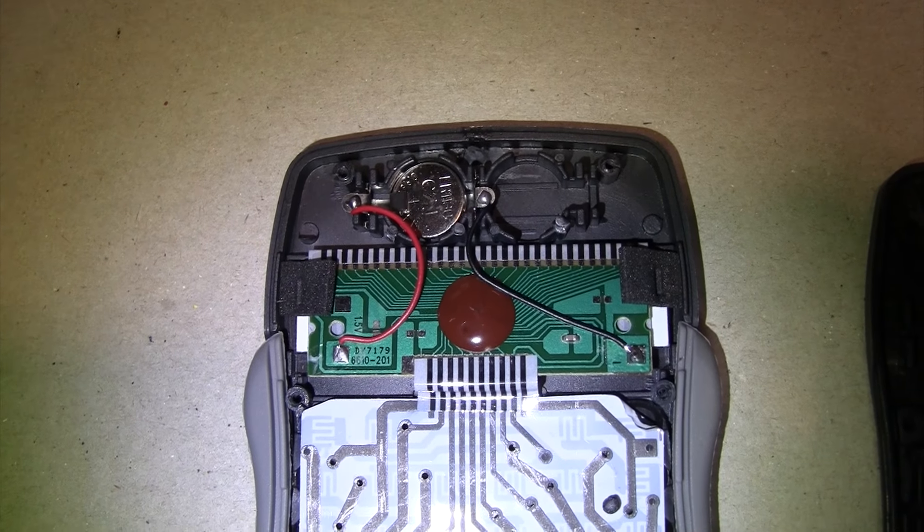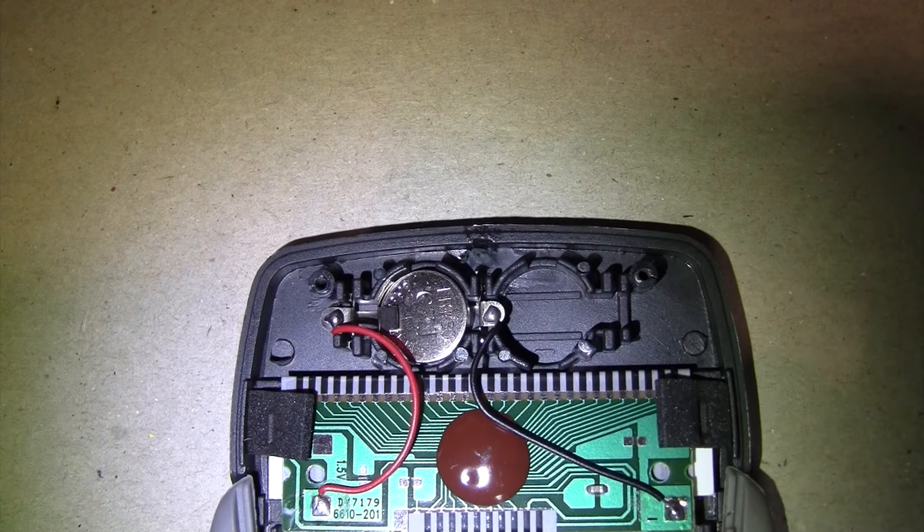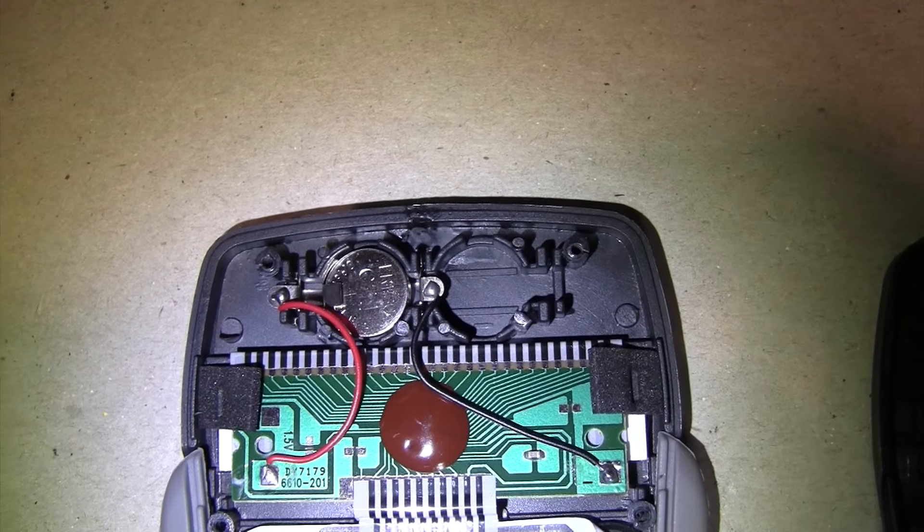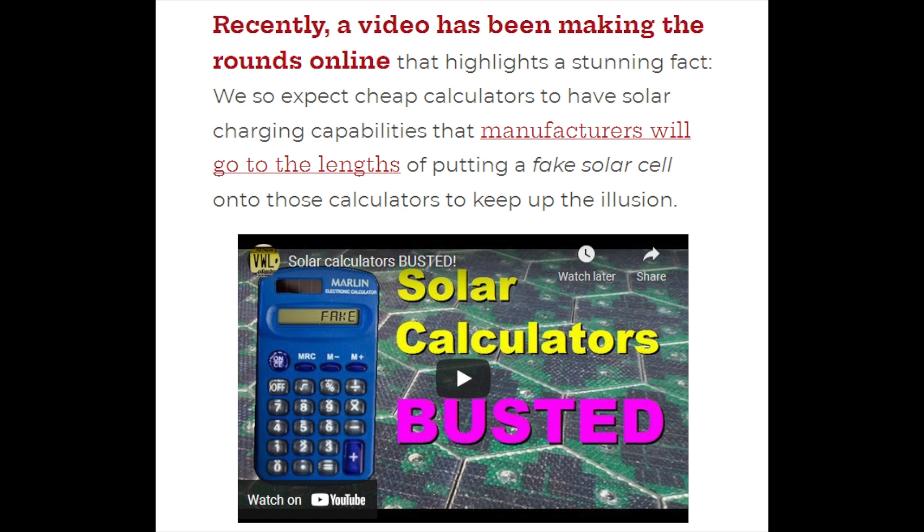I'm sure many of you wanted to see what it looks like inside, so here it is. And as expected, it's pretty much exactly the same as the basic four function calculators. You just get a membrane keyboard, a single blob chip doing everything on the back of the LCD, and a single LR1130 battery, even though it looks like there's space for two. And at least it doesn't have a fake solar cell. I think my video about that ended that trend in these cheap calculators.